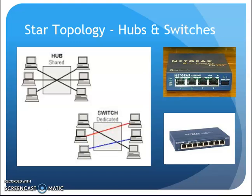So there's a quick overview of network topologies along with the hub and the switch. The hub is older technology; the switch is what we're using now. The switch provides individual connections between devices so multiple conversations can happen at once, giving us an overall higher level of throughput through the network.